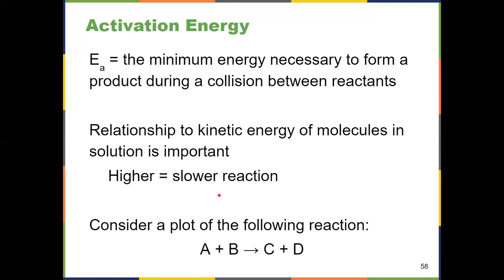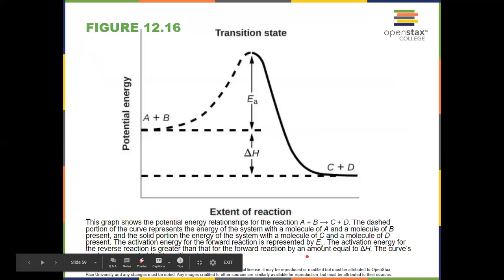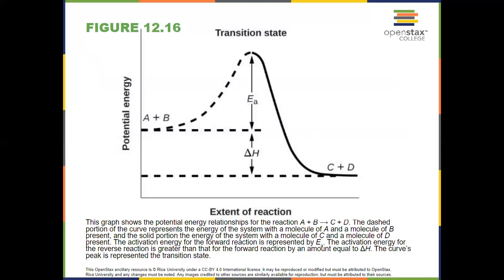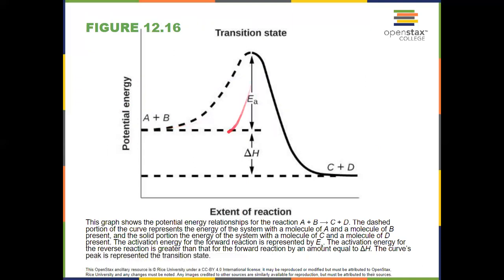And we can see what the activation energy is in a reaction coordinate diagram. If we think about a reaction having reactants A and B forming the product C and D, what would that look like with a reaction coordinate diagram? A and B are my reactants. C and D are my products. Again, potential energy versus time. The activation energy, it's what's represented here, that hill that we have to get over.